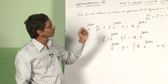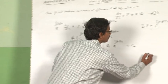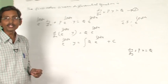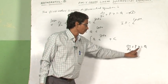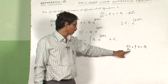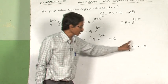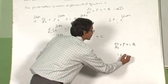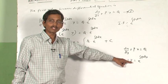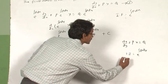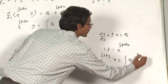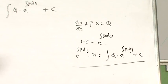We also discussed the other type of differential equation: dx by dy plus P x equals Q, where P and Q are functions of variable y. Here y is the independent variable and x is the dependent variable. For this, the integrating factor is e power integral P dy. Multiplying by the integrating factor, the general solution is: e power integral P dy times x, equals integration of Q times e power integral P dy, plus c.